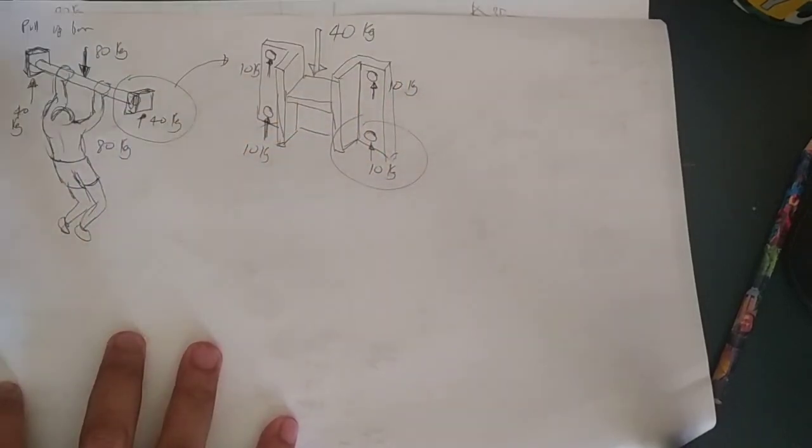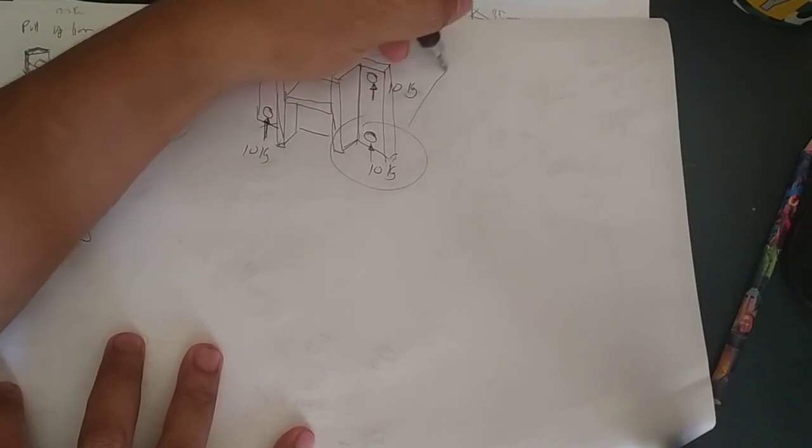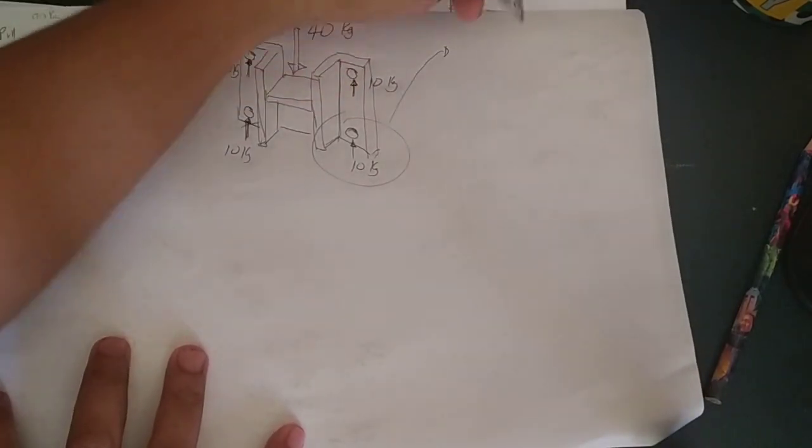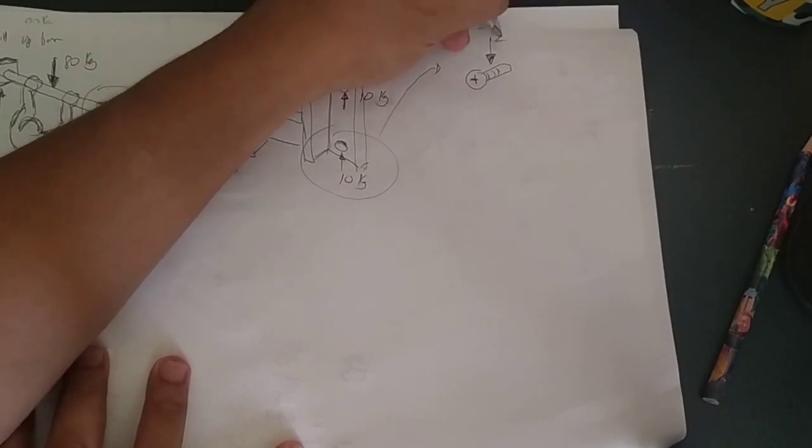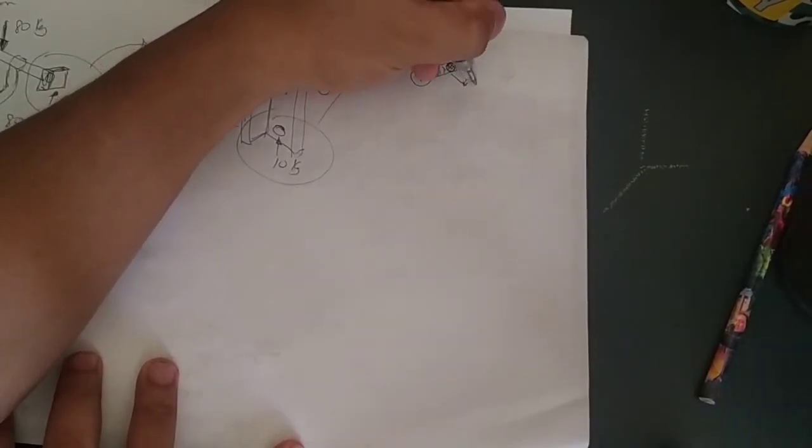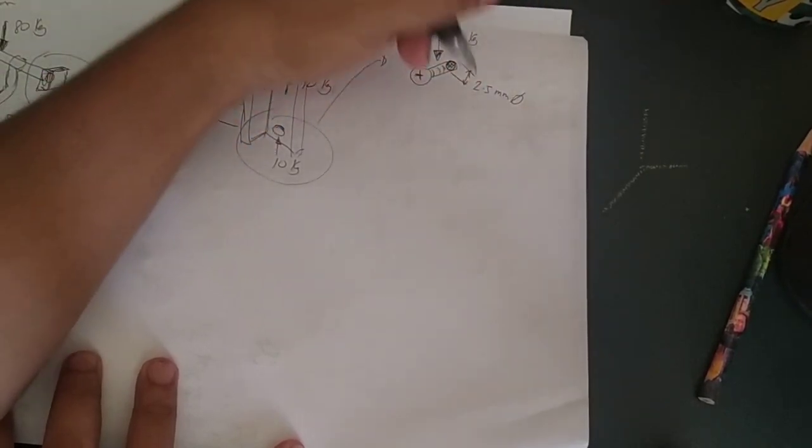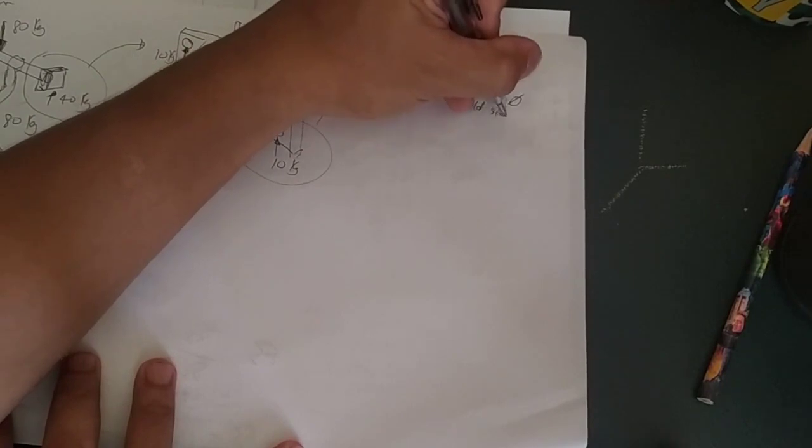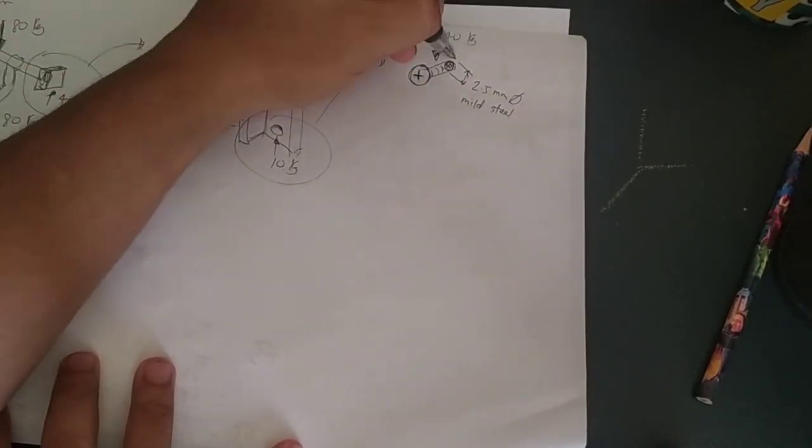Assuming that one screw is identical to the others, we can just do one calculation on one screw. There is a load applied to the screw of 10 kilogram. For this particular screw, I'm going to use a 2.5 millimeter diameter screw, mild steel. Now the reason that I'm using 2.5 and mild steel is because this is what is available in my shop.